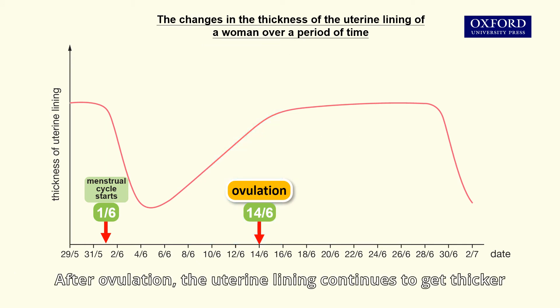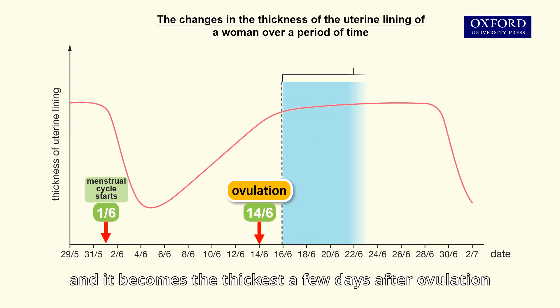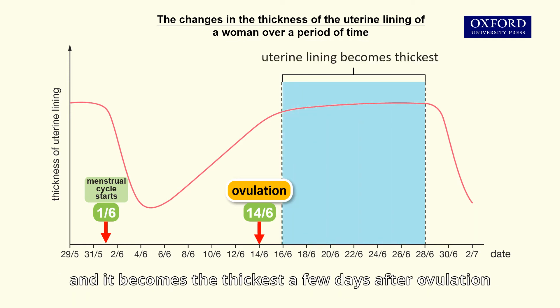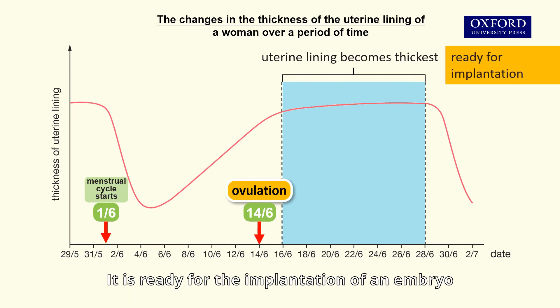After ovulation, the uterine lining continues to get thicker and it becomes the thickest a few days after ovulation. It is ready for the implantation of an embryo.